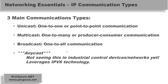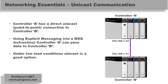I do want to mention the fourth one, Anycast, just for completeness. We're not seeing it in industrial control device networks yet — it really leverages the IPv6 protocol. Now, Unicast communication: Unicast is a direct point-to-point or one-to-one connection. You can see controller A connecting directly to controller B — there could be a switch in there, but regardless it is a direct point-to-point connection.